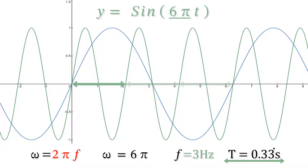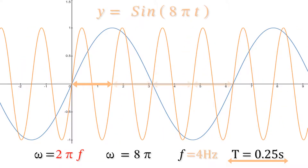We can see three waveforms here fit in where one did before. Now the frequency is 4 times as fast — f equals 4 hertz — so we can fit four complete spins of the circle, or four sine wave waveforms, in compared to the blue waveform.